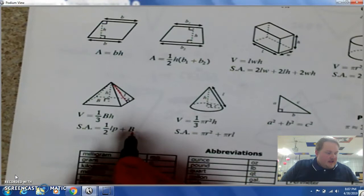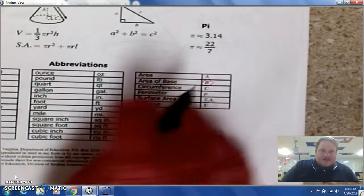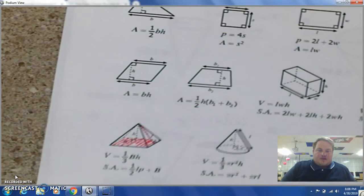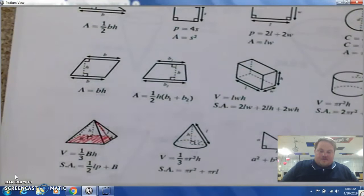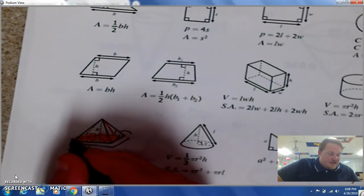L represents this line here, the slant height. Big B represents the area of the base, which is the square bottom, and then P represents the perimeter. Remember, perimeter is as if you're building a fence, so you're going to go all the way around your square base pyramid. So let's go ahead and write that formula down.